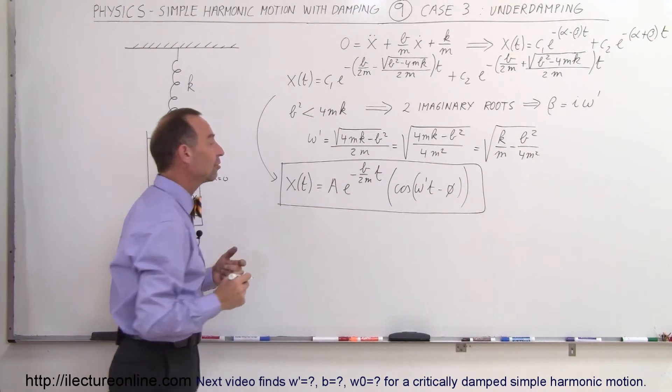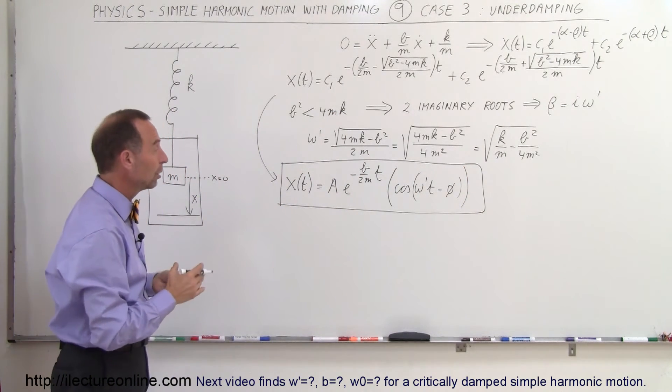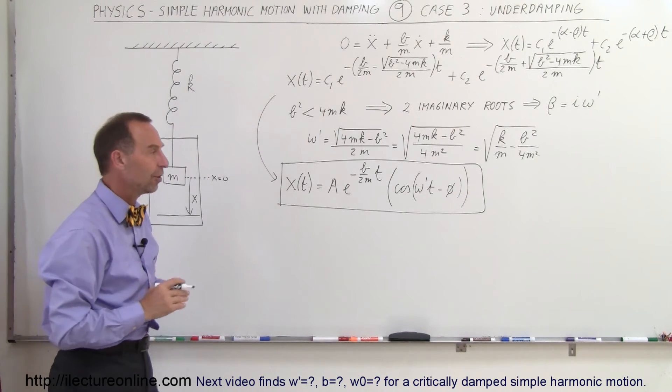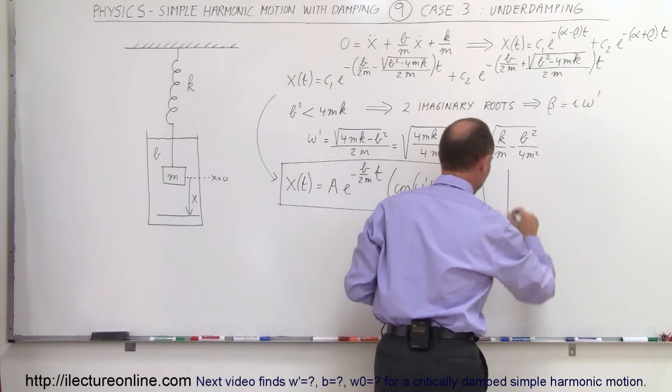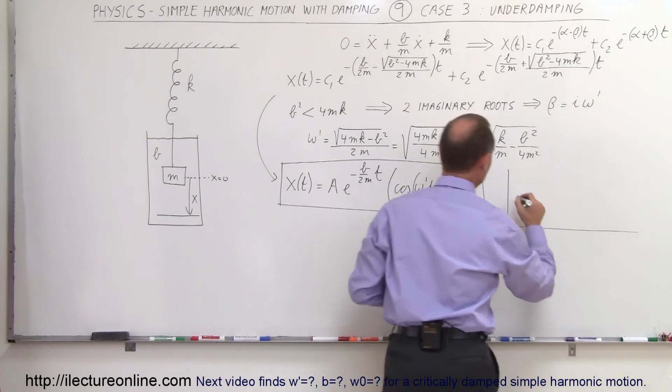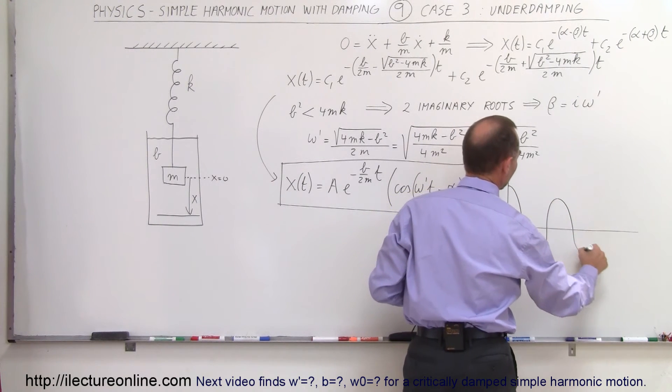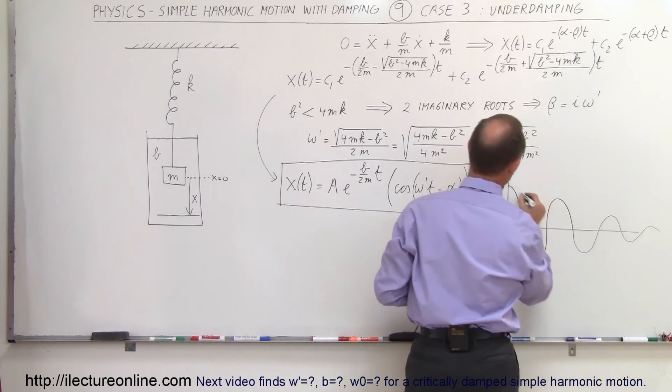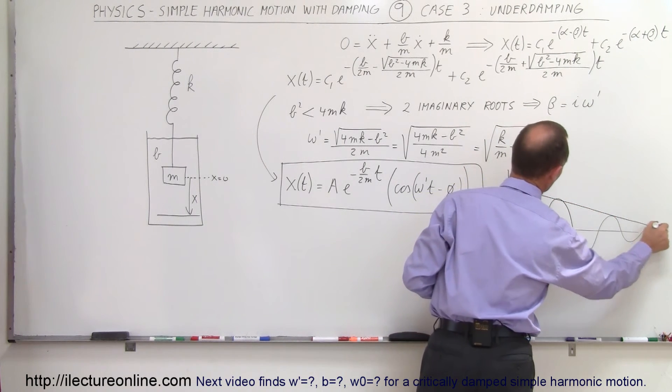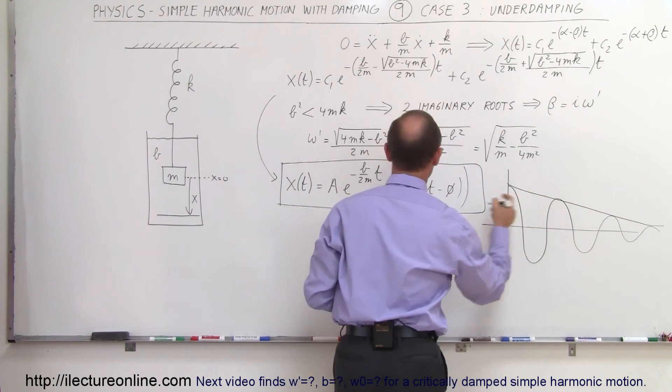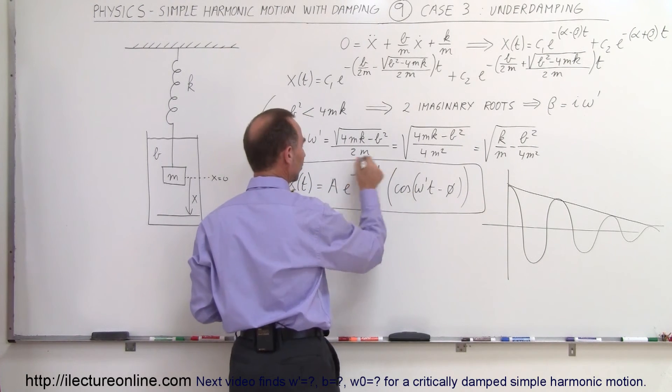So this will now be the new equation describing the oscillatory motion of an underdamped system. And what that looks like when we graph it, starting maybe for maximum amplitude, it's going to look like this and it's going to diminish over time.